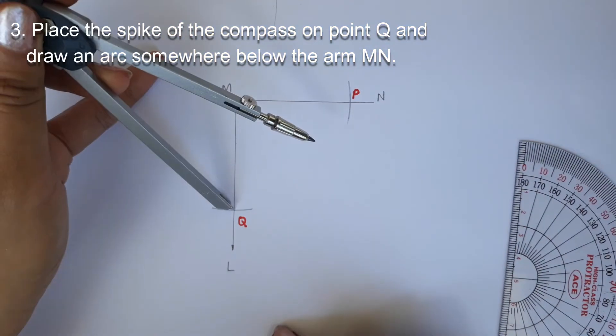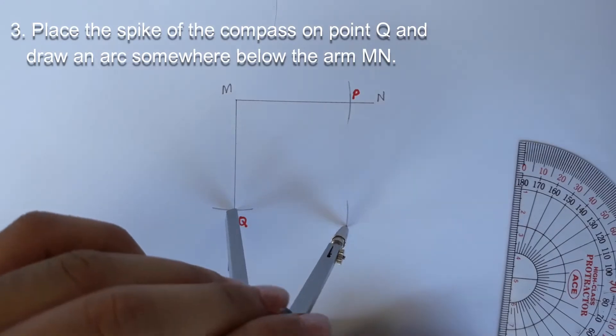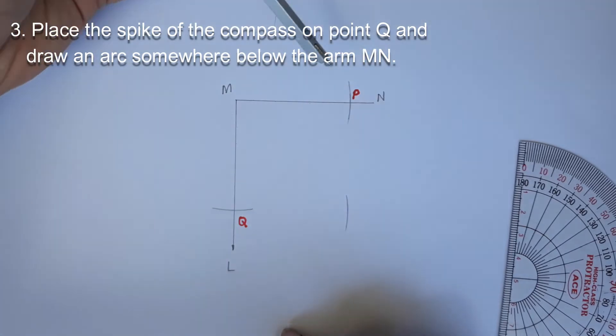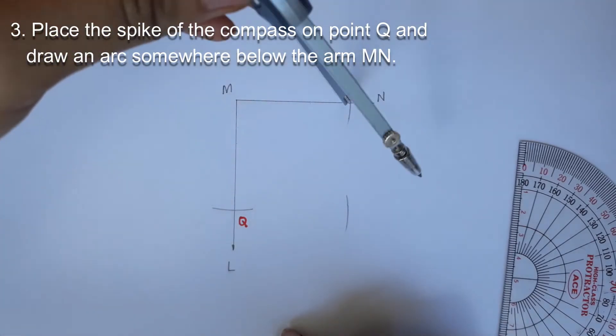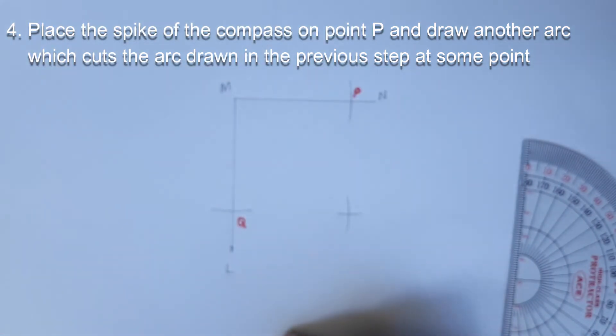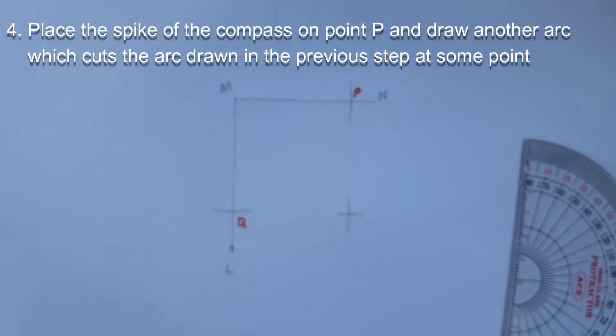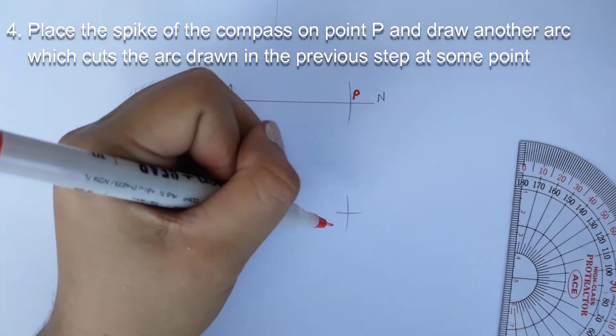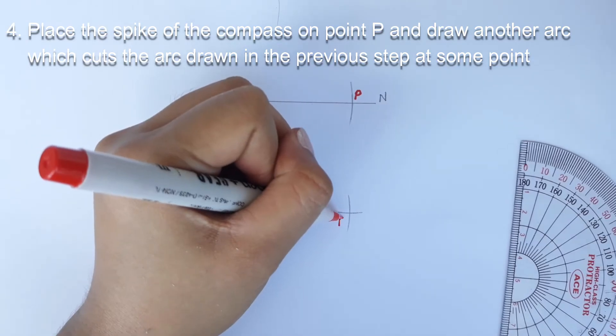Step 3. Place the spike of the compass on point Q and draw an arc somewhere below the arm MN. Step 4. Place the spike of the compass on point P and draw another arc which cuts the arc drawn in the previous step at some point, let's say R.